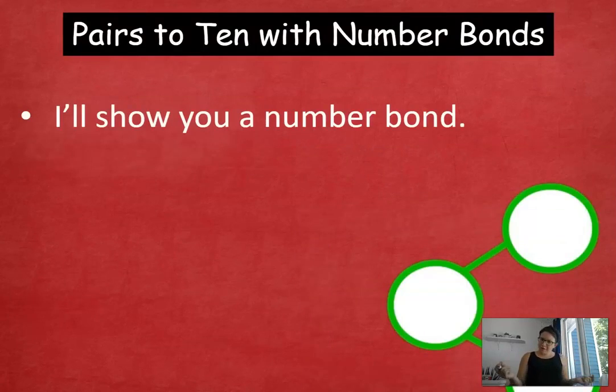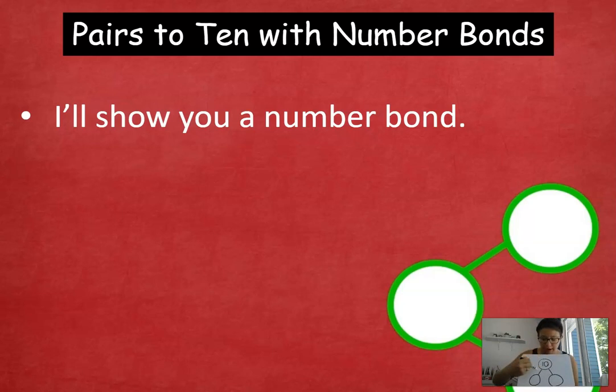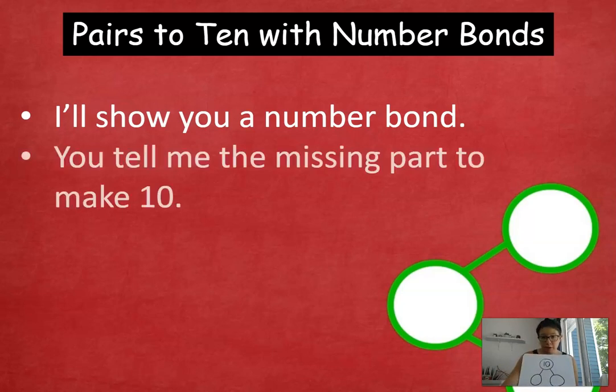Now we're going to preview our number bonds. Remember in our number bonds, we have three circles. You guys are experts at number bonds. Three circles. We have a whole and two parts, and we can manipulate this in a bunch of different ways. We can do addition, subtraction, lots of different things with the number bonds. For our number bonds for today, our whole is always going to be 10. So, go ahead and draw this number bond on your paper. You're going to have a whole of 10 every time in two parts. I'm going to show you a number bond. You are going to tell me the missing part to make 10.